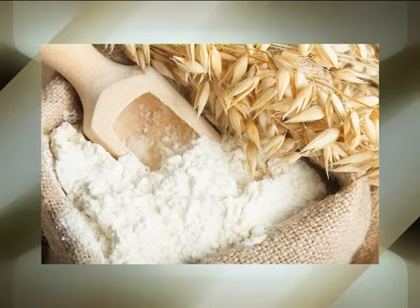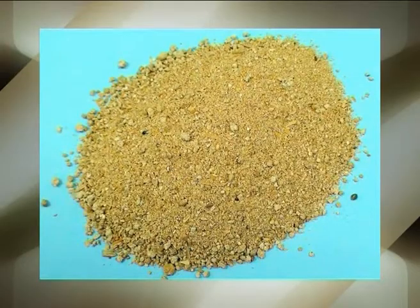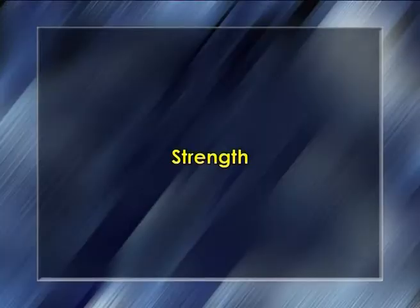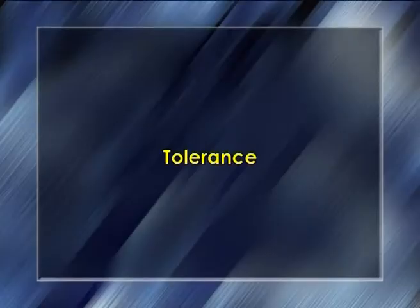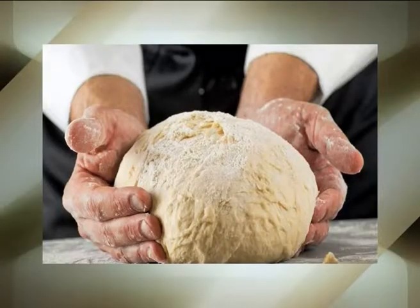First, color: flour should have a creamy white appearance without bran fragments; otherwise the bread will have a dull white crumb. Bleating of flour contributes towards control of the degree of creaminess. Second, strength: flour is referred to as strong or weak. For quality bread, strong flours need a longer fermentation. Bread flour should have sufficient strength so that the dough retains its shape during baking. Third, tolerance: the ability of flour to withstand the fermentation process and produce a satisfactory loaf over a period of time.